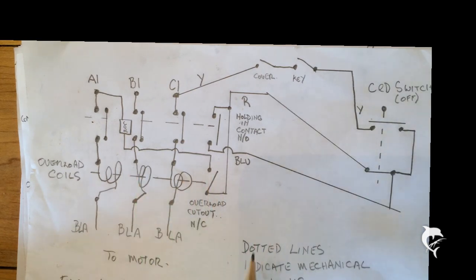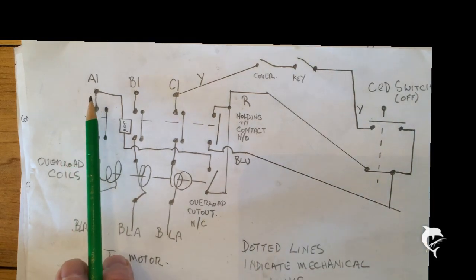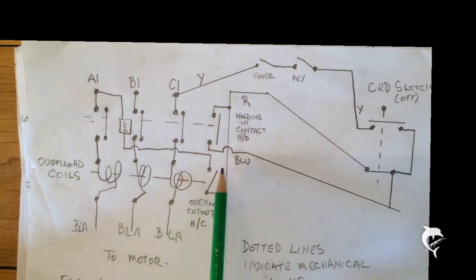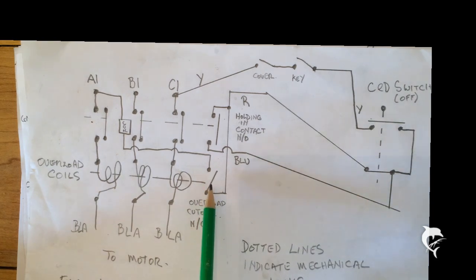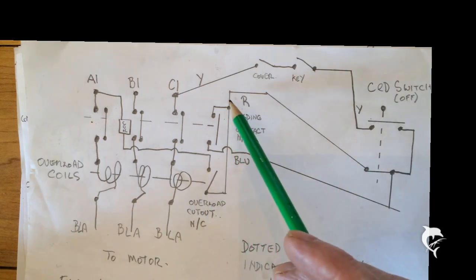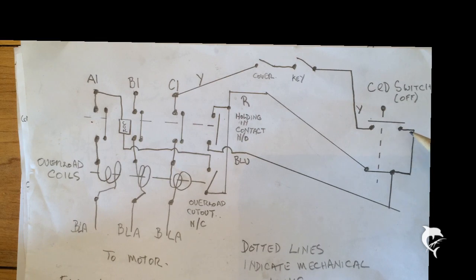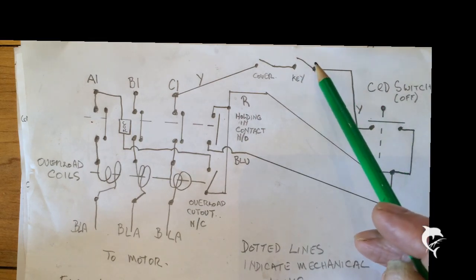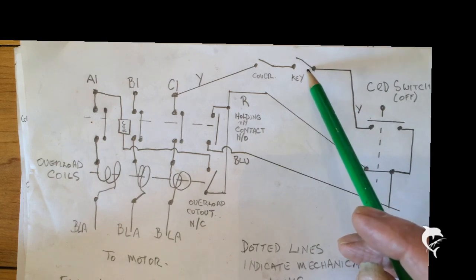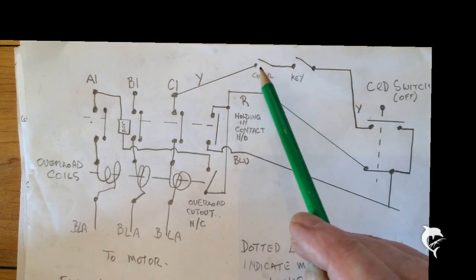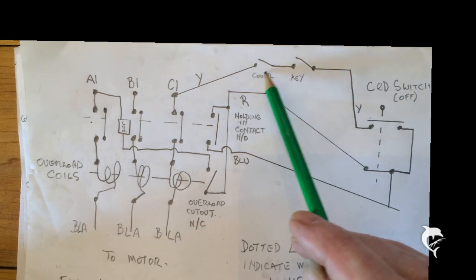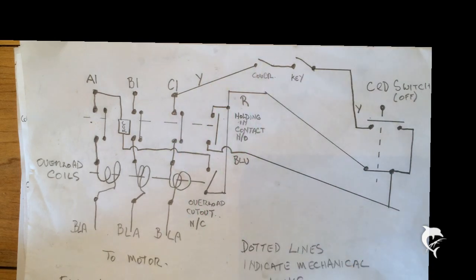So you can think your way through the circuit by starting at A1, which is a line in, going through the coil, through the overload cutout switch which is labelled here normally closed. I've drawn it in the open position, but at rest when it's reset it's normally closed. And then we go up there through the on-off switch, and then back through the safety circuit, which is the key switch which locks the drawers and switches the lathe on and off, and also the cover switch which prevents the lathe being operated without the end cover on, back to another phase.